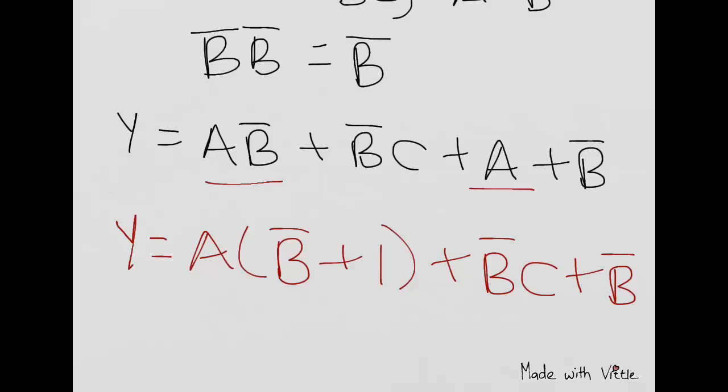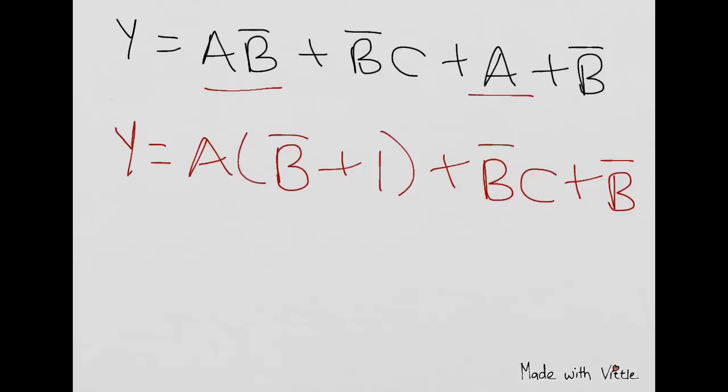So then what happens after that? So NOT B or 1, what's that equal to? NOT B or 1 is equal to 1. So we have, and A and 1 will be equal to A.